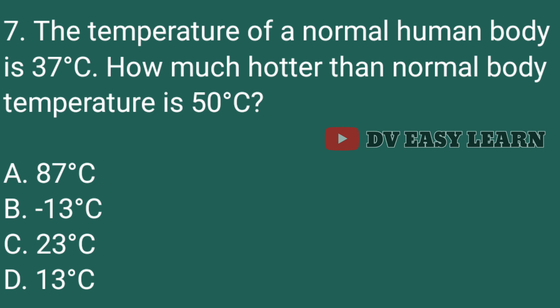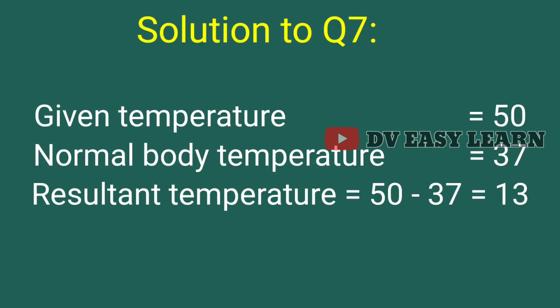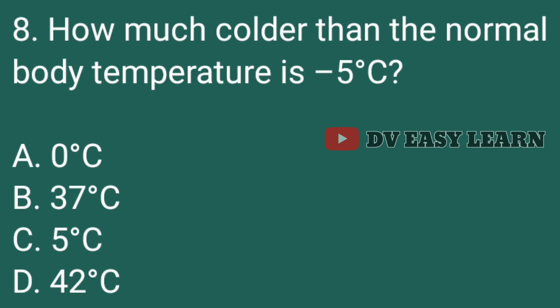Question No. 7. The temperature of a normal human body is 37 degrees Celsius. How much hotter than normal body temperature is 50 degrees Celsius? Question No. 8. How much colder than the normal body temperature is minus 5 degrees Celsius? Correct answer, 42 degrees Celsius.